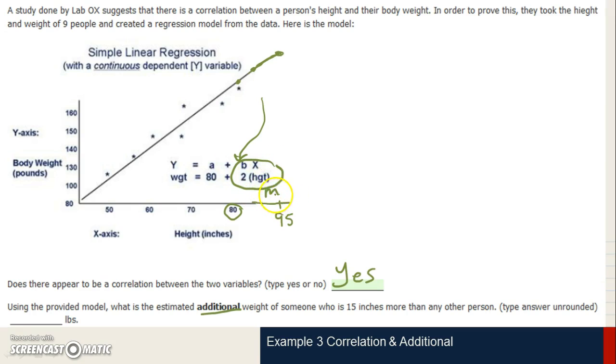So we're going to take the slope, which is 2, and multiply that by 15. So 2 times 15, we know that is 30. So if it's asking us for the additional weight, we know that the additional weight is 30 pounds.